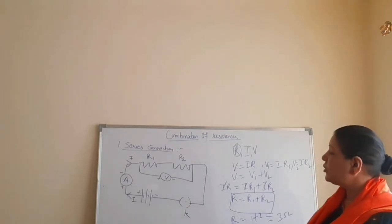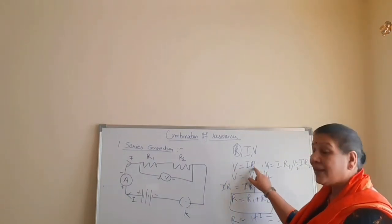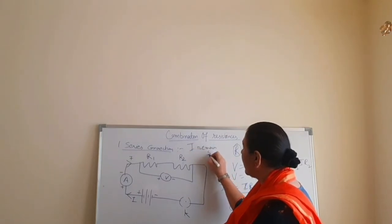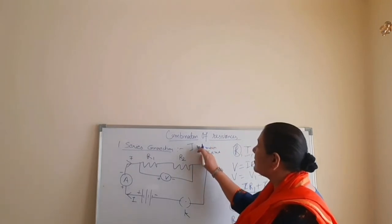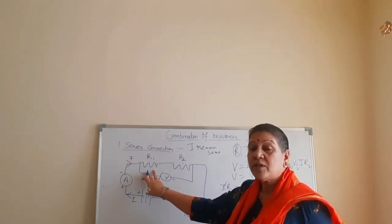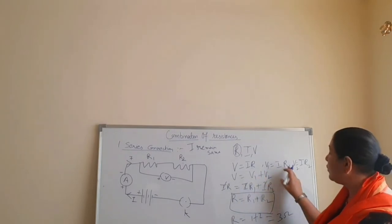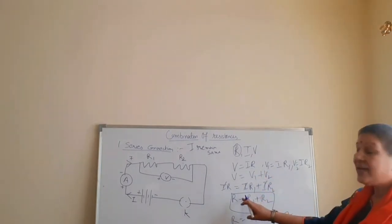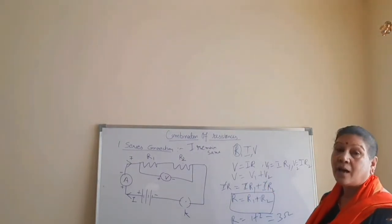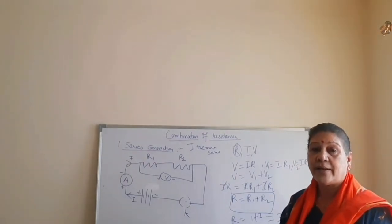I hope it's clear to you. R is equal to R1 plus R2. We started with V is equal to IR, and since I remains the same in series connection whereas V differs, V1 is equal to IR1 and V2 is equal to IR2. So IR equals IR1 plus IR2, and cancelling I we get R is equal to R1 plus R2 — that is the formula for finding the equivalent resistance in series connection.